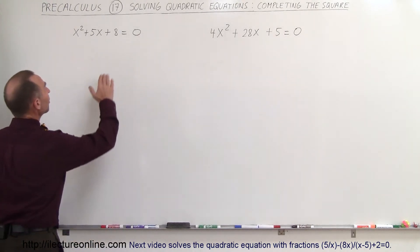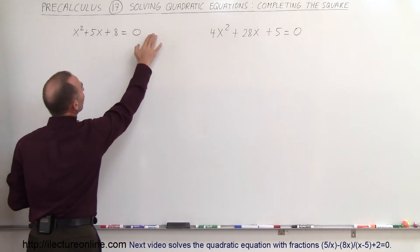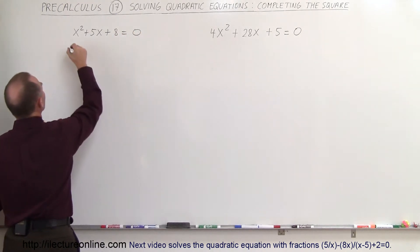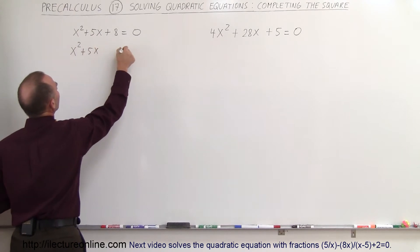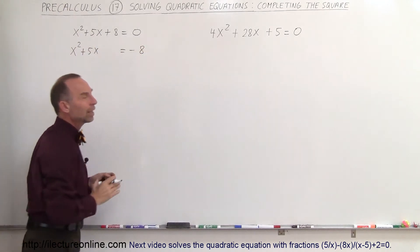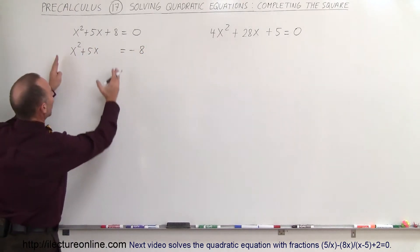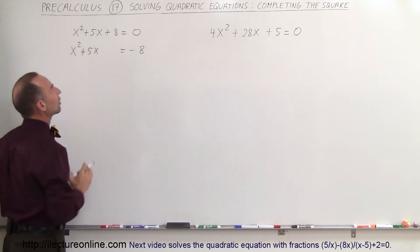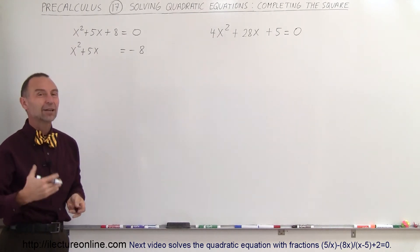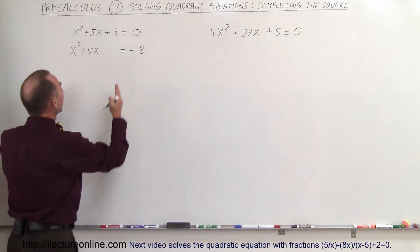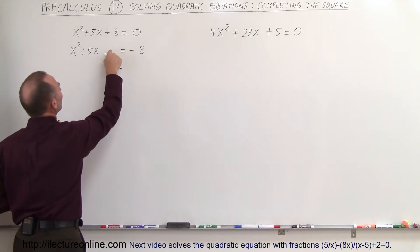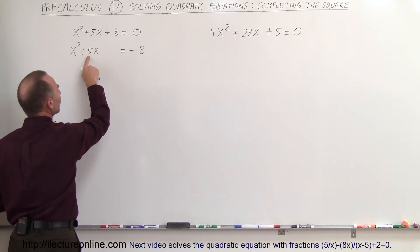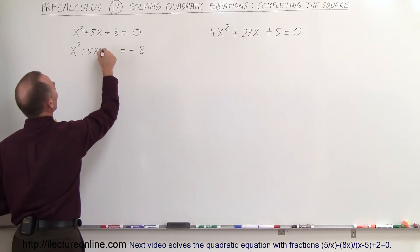The first step is to take the constant term and move it to the other side of the equation. So we write x² + 5x = -8. The reason we do that is we want a perfect square on the left side — that's why they call this the completing the square method. To make a perfect square, we take the coefficient of the middle term, divide by 2, and square it, then add it to the left side.